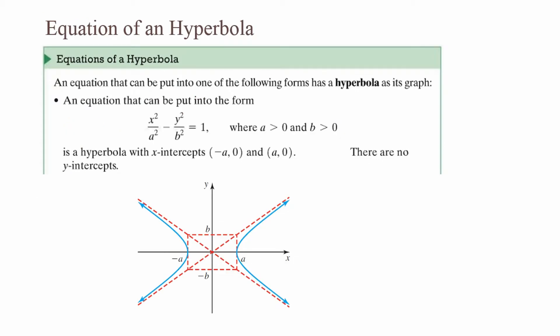Equation of a hyperbola: an equation in the form x² / a² − y² / b² = 1, where a > 0 and b > 0, is a hyperbola with x-intercepts (−a, 0) and (a, 0) — there are no y-intercepts. I can distinguish a hyperbola from an ellipse because a hyperbola always has a minus sign in the middle. The graph looks like two parabolas: one on the left with a vertex of (−a, 0) and one on the right with a vertex of (a, 0).